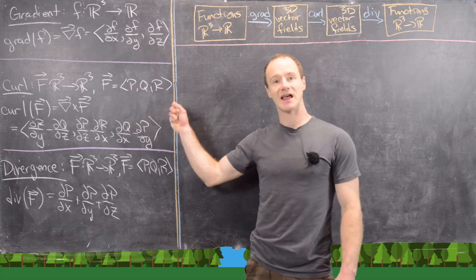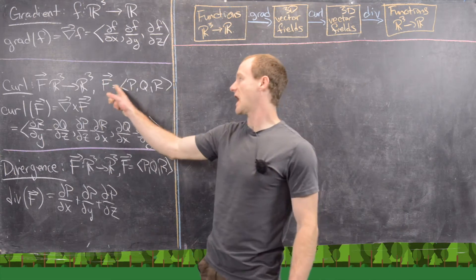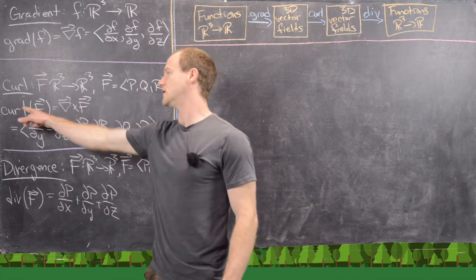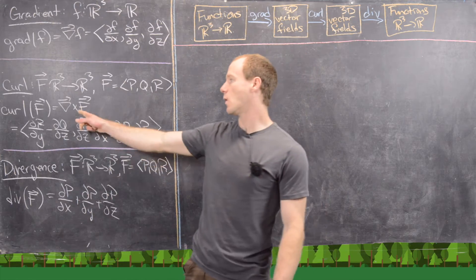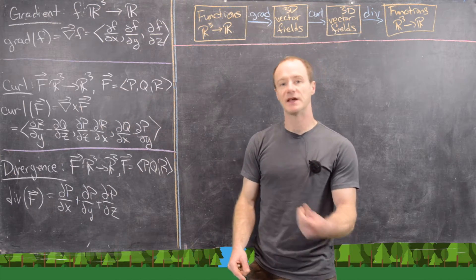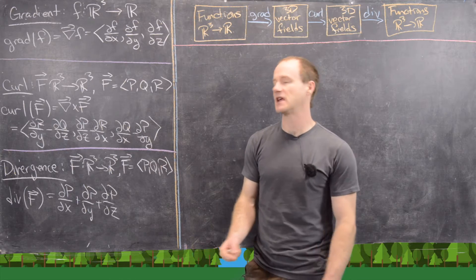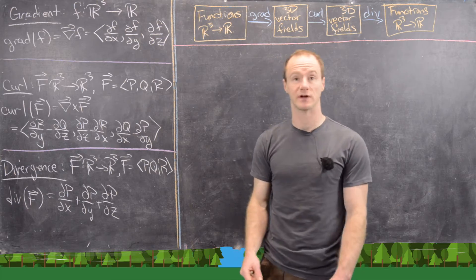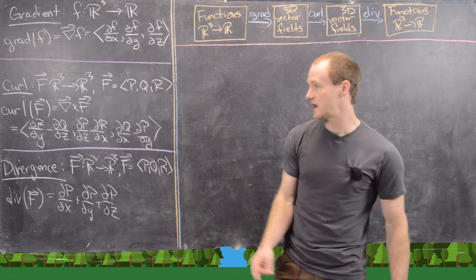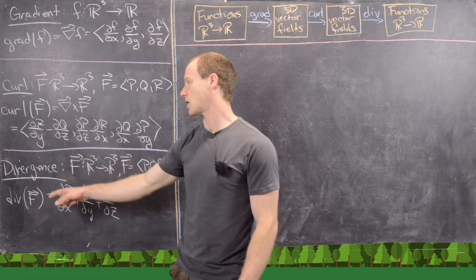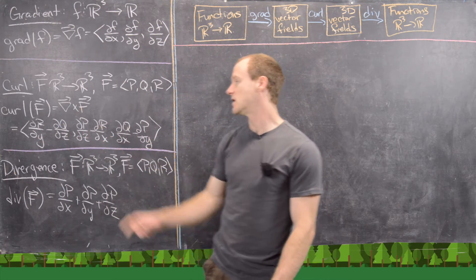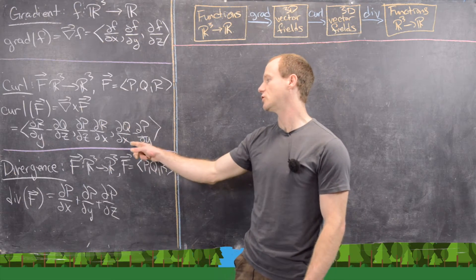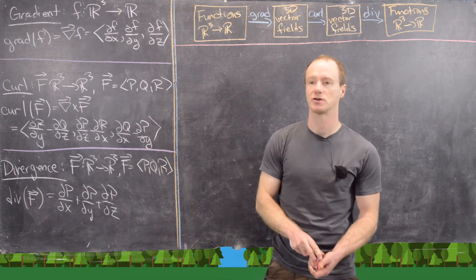Then given a three-dimensional vector field — we'll call it F with component functions P, Q, and R — the curl, which is sometimes denoted with just the word curl or with del cross F, because it is almost like taking the cross product of this vector field with the differential operator del, is given by: partial R partial Y minus partial Q partial Z, comma, partial P partial Z minus partial R partial X, and then finally partial Q partial X minus partial P partial Y.